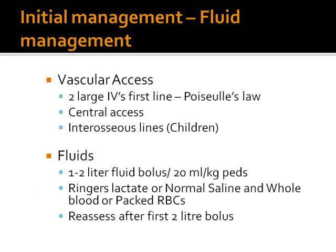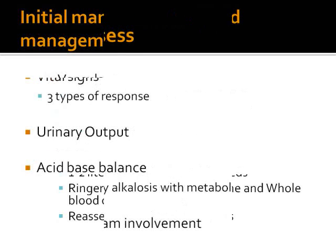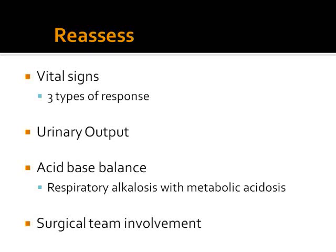In the initial fluid management, we need to get vascular access using two large-bore peripheral lines, as per Poiseuille's law, which states that the rate of flow is proportional to the fourth power of the radius of the cannula and is inversely related to its length. So the shorter the cannula, the better the flow. For this reason, central lines are not as good at infusion of fluids as peripheral lines are. In children, we should get intraosseous access. The fluids we give are a 1 to 2 liter fluid bolus, or 20 mls per kg in pediatrics, using Ringer's lactate and normal saline, then whole blood and packed red blood cells. After giving 2 liters of fluid for adults, we reassess for response by checking the vital signs and urine output. We do arterial blood gases to check acid-base balance. In shock, patients typically have respiratory alkalosis because of tachypnea, and metabolic acidosis because of tissue hypoxia. It is also very important to consult the surgical team early, because patients in shock might require surgery.